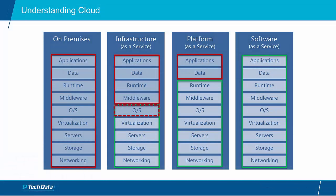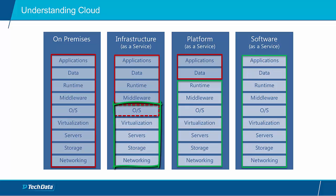The first core cloud service model is Infrastructure-as-a-Service, or IaaS. In this model, the cloud customer outsources the infrastructure responsibility to an external cloud provider. What you see outlined in red is what's going to be managed by you. The rest of the items outlined in green is what you have decided to outsource to the cloud service provider to maintain.